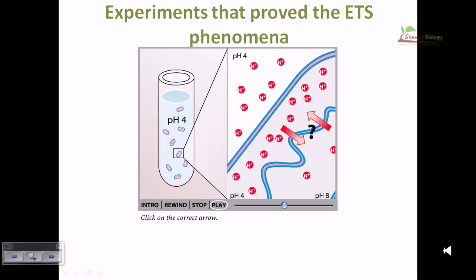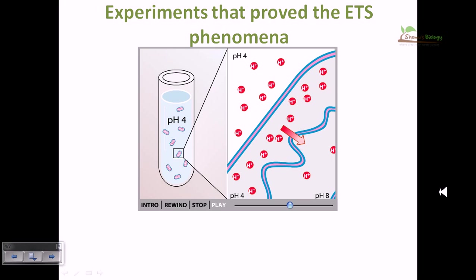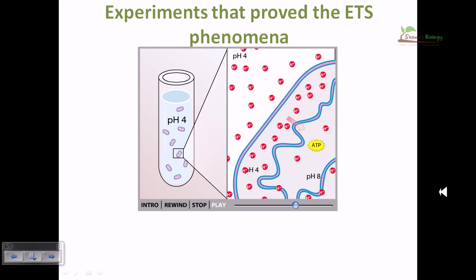Which direction do protons tend to flow across the inner membrane? The intermembrane space is full of protons and the matrix has a lesser amount. By the diffusion mechanism, molecules always move from higher concentration to lower concentration — so protons tend to flow from the intermembrane space into the matrix. They only flow through specialized channels in the inner mitochondrial membrane. With the formation of this artificial proton gradient, the mitochondria formed ATP.